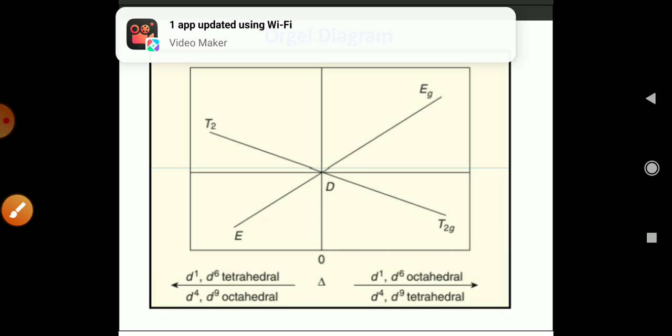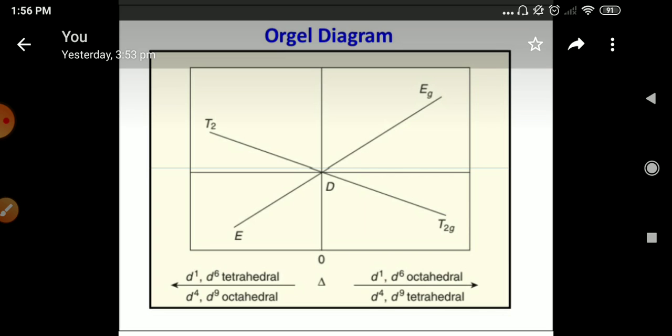The term here are using of the transition, the allowed transition. The Orgel Diagram only show the allowed transition. For D1, the allowed transition, the term symbol is 2D. D1 and D9, the allowed transition, the term symbol is 2D.